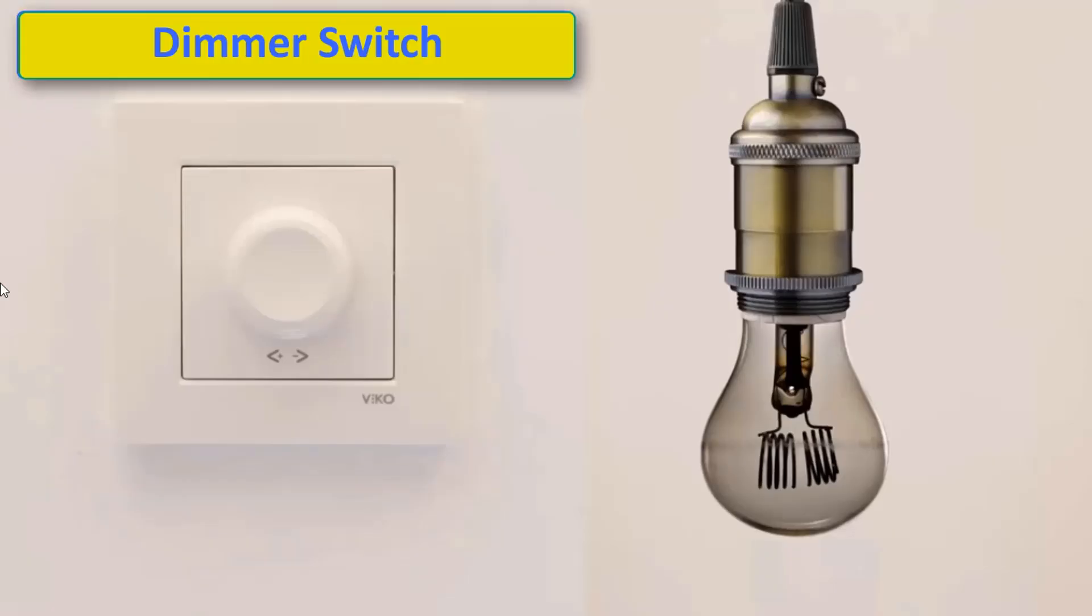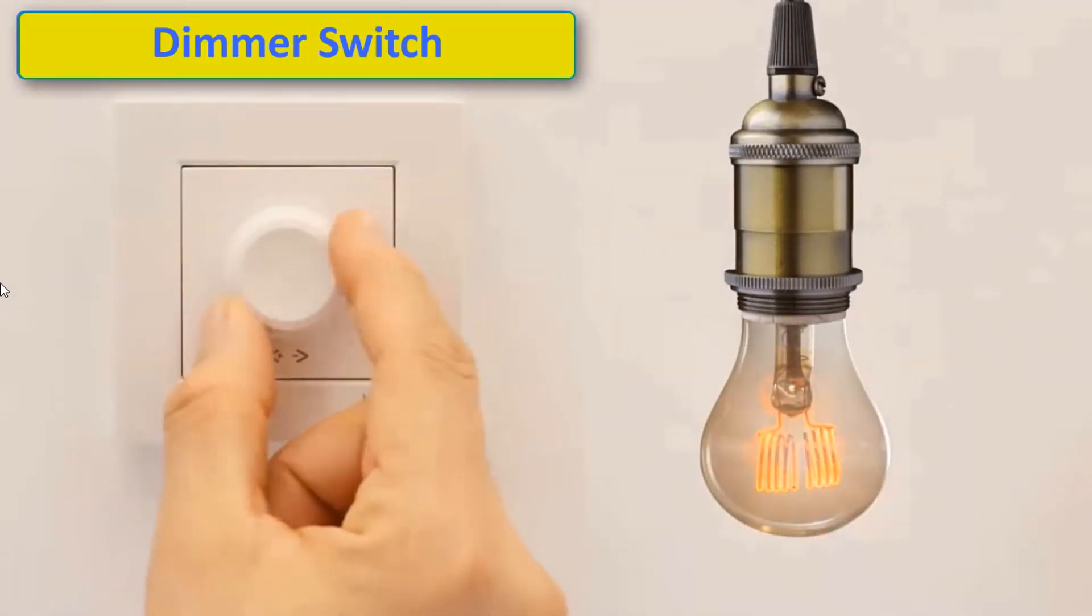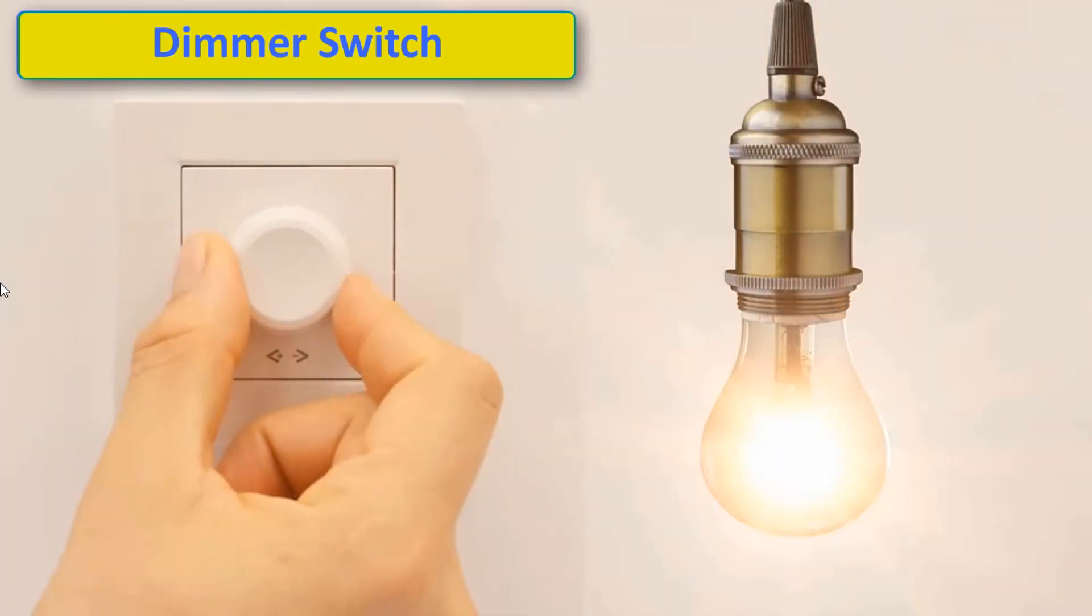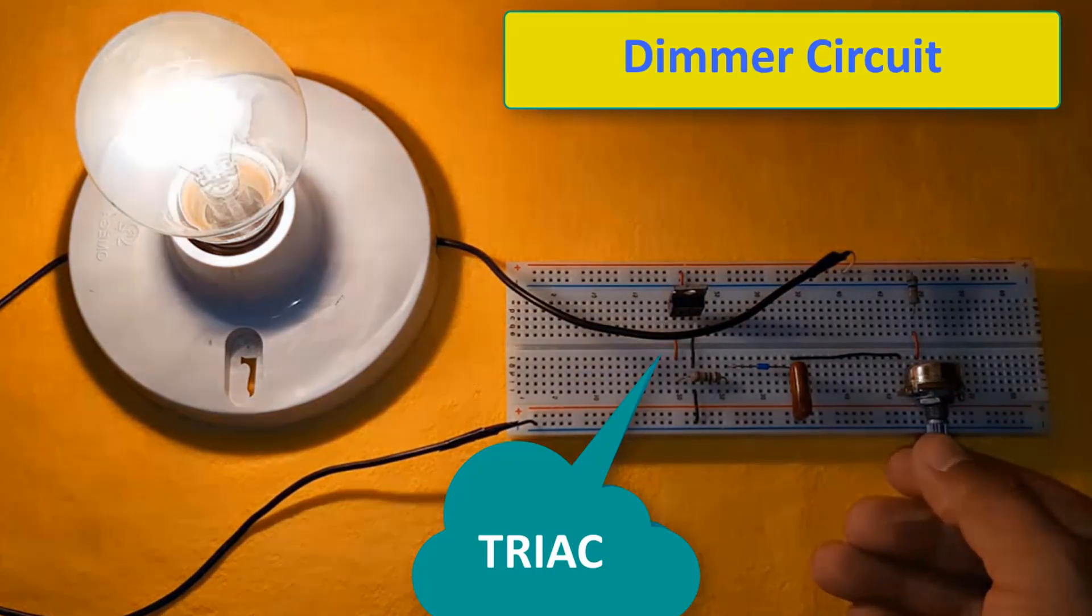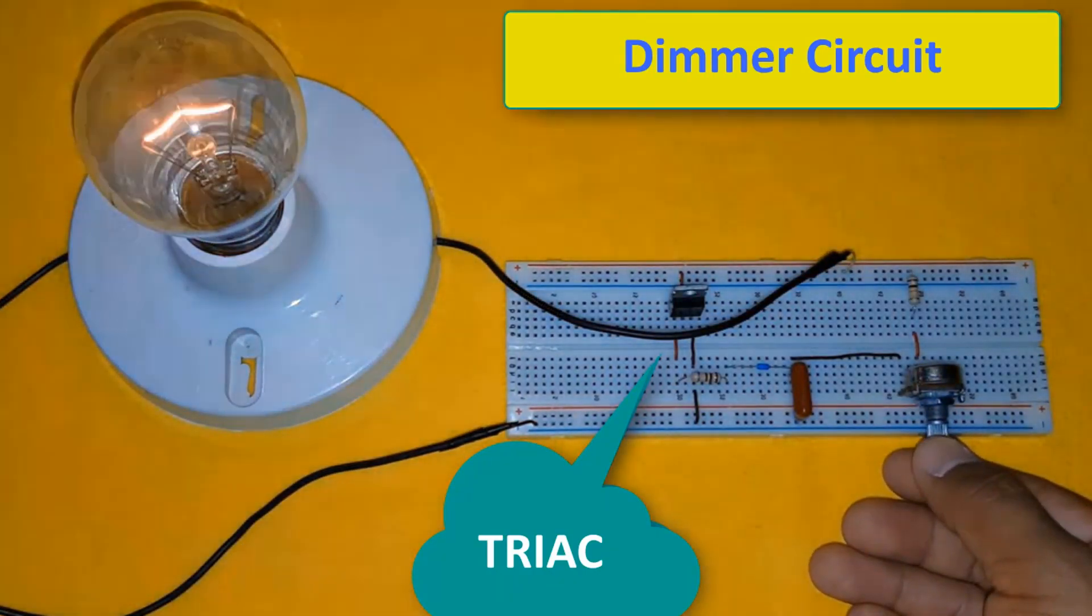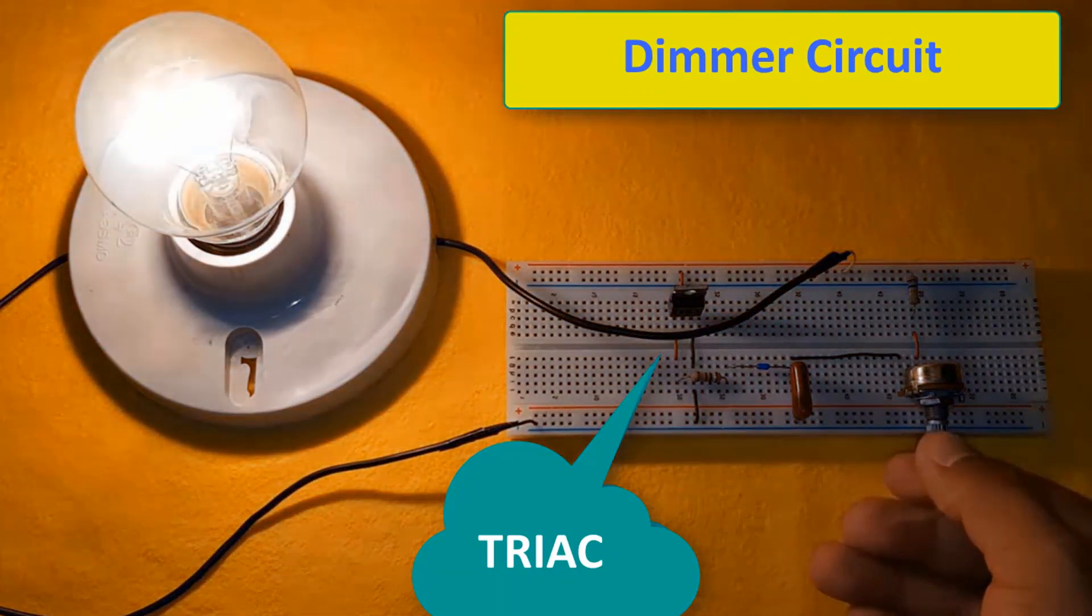TRIAC is an improved version of the thyristor. While the thyristor can control large currents by operating in a single positive or negative alternator in AC, TRIAC can control large currents in both alternances of the AC waveform.